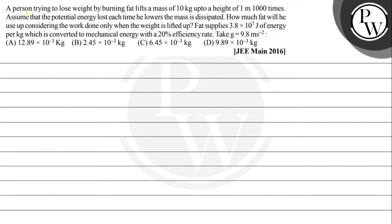Hello Bacho, let us see the question. The question says, a person trying to lose weight by burning fat lifts a mass of 10 kg up to a height of 1 meter, 1000 times. Assume that the potential energy lost each time he lowers the mass is dissipated. How much fat will he use up considering the work done only when the weight is being lifted up?